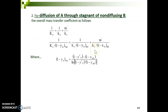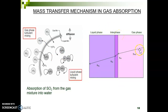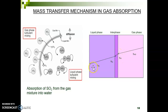This is the equation for diffusion of A through stagnant B. Now we go to the mass transfer mechanism in gas absorption. As you know, gas absorption involves two phases — gas and liquid. This is how we represent the process: the concentration profile goes from the gas phase to the interface and then to the liquid phase.